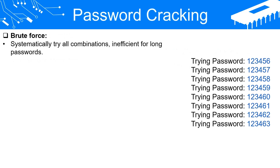Different methods of cracking passwords. There are various techniques to perform reverse hash matching. Some of the most common methods are brute force attacks, dictionary attacks, hybrid attacks, and rainbow table attacks. Each of these methods varies in complexity and effectiveness.